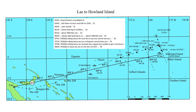Two minutes later at 0748 local, she reported: 'KHAQQ calling Itasca. We received your signals but unable to get a minimum. Please take a bearing on us and answer on 3105 with voice.' Itasca received long dashes on 3105 kilocycles, but they could not take a bearing on that frequency.